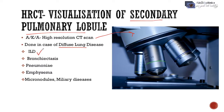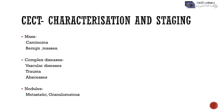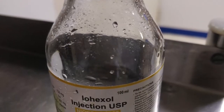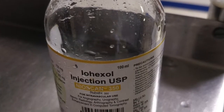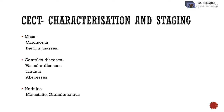Basically, HRCT is done for evaluation of very small structures in the lungs, while contrast CT is done for characterization and staging of nodules and masses. The full form of CCT is Contrast Enhanced CT scan. In this CT, we give contrast material to the patient.